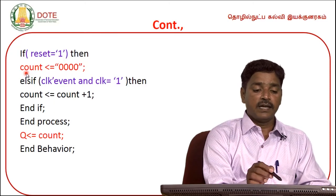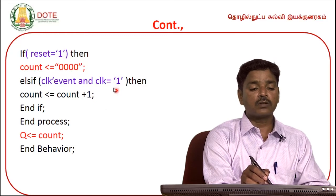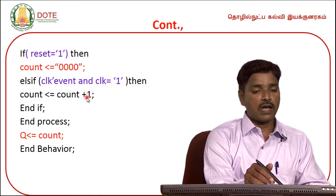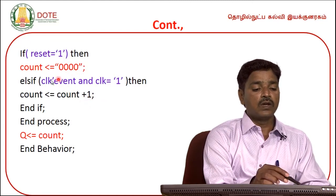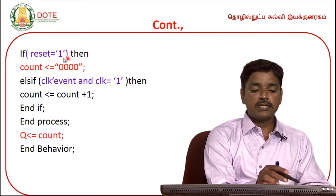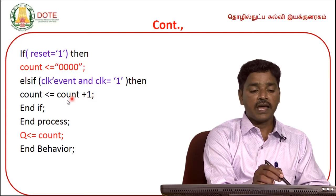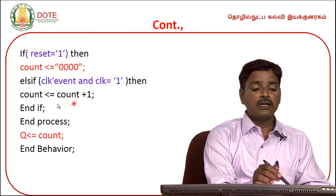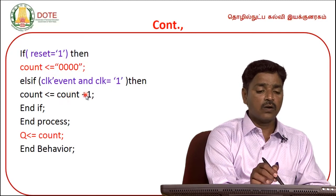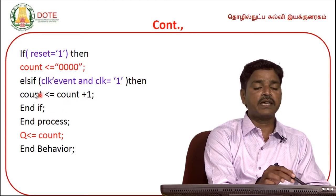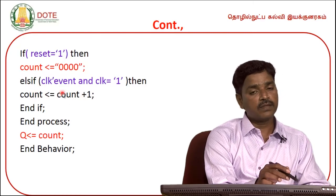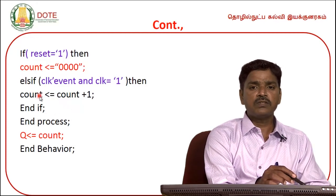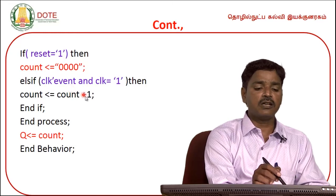In the else branch, when the clock applies, whatever value is already in count — on the next clock pulse, we add 1 to the count. This continues: on the third clock, we add 1 again. For a 4-bit counter, the maximum count is 15. So from 0 to 15 we count up, and on the 16th clock, it resets back to 0.